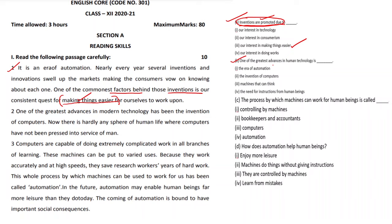Now question number two: 'One of the greatest advances in human technology is.' The key phrase is 'greatest advances in human technology.' Let us check the second paragraph: 'One of the greatest advances in modern technology has been the invention of computers.' So the invention of computers is the answer. We go to the options and choose: 'The invention of computers' — that is the right option.